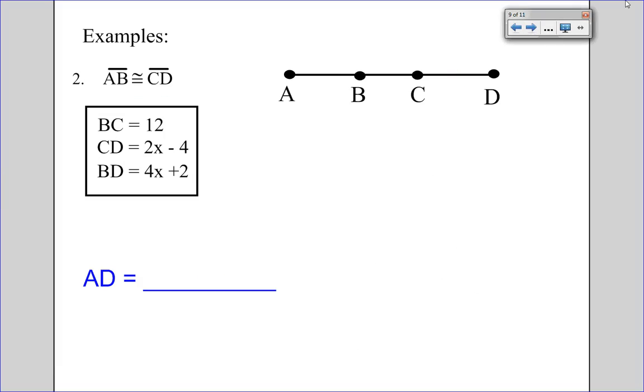We move on to this problem, and it's a similar problem. It says AB is congruent to CD. At this point, you should take a moment, pause the video, and try this problem out on your own. Let's go ahead and label the problem. BC is 12, CD is 2x minus 4, and BD, this whole portion here, is 4x plus 2.